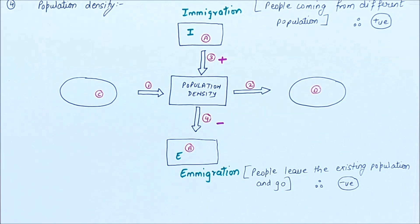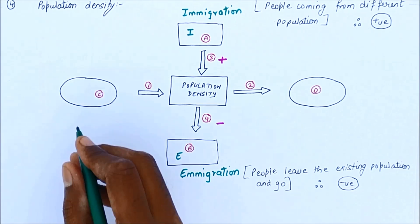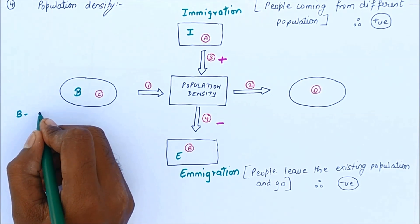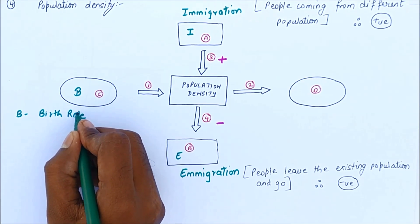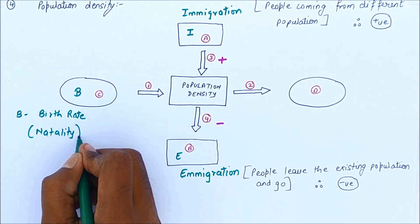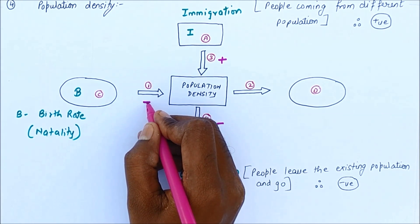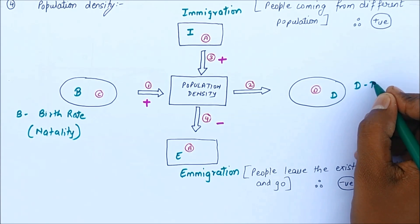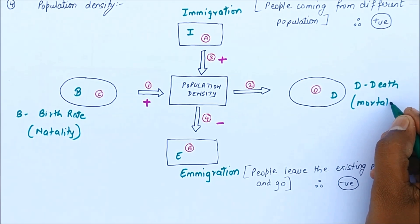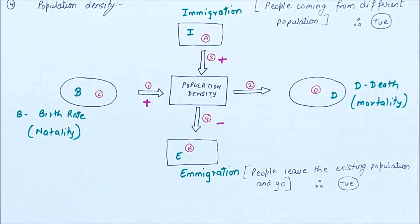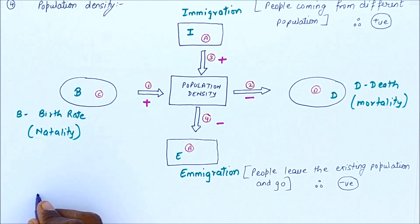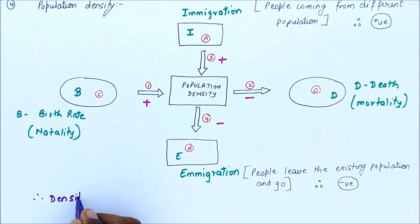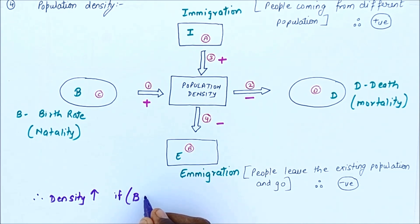Part C is birth rate, also called natality — the number of people being born. If births occur, the population increases, so it is a positive factor. Part D is death rate, also called mortality — when people die, the population decreases, so it is a negative factor. The key formula: population density increases if birth rate plus immigration (B + I) increases, and density decreases if death rate plus emigration rises.